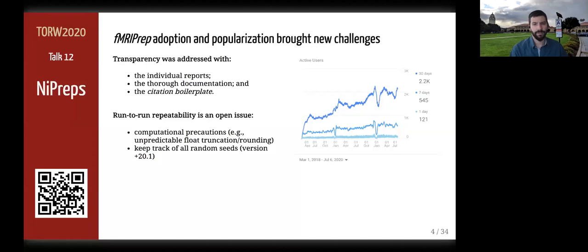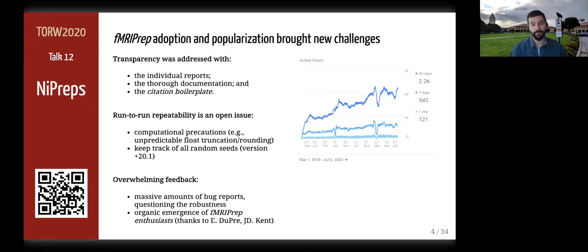Reproducibility in terms of run-to-run repeatability of results became a more apparent problem, and we are always trying to minimize the variation caused by computational factors and software versions. We always maintain close attention to all feedback channels. At some point we were flooded with bug reports that we needed to address. We also started to doubt robustness against input variability and set a thorough stress test plan using data from OpenNeuro, reported in our Nature Methods paper. Among this feedback flooding, external friends started to emerge, lending their shoulders in answering questions and fixing bugs. I want to thank Elizabeth Dupre from McGill and James Kent from University of Iowa for being the earliest adopters and contributors.